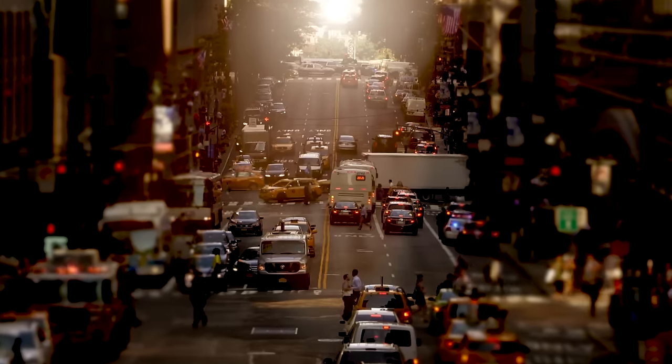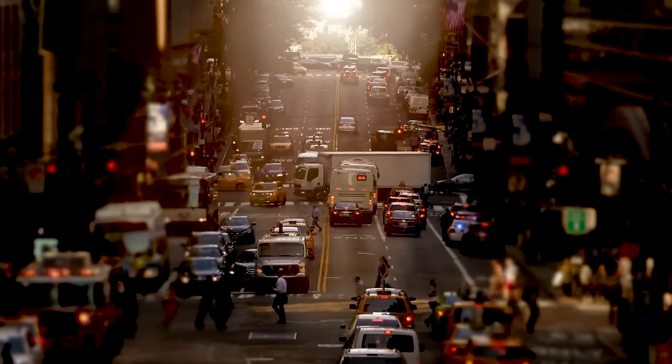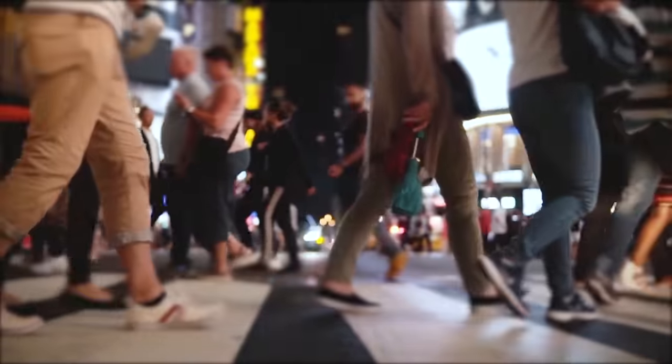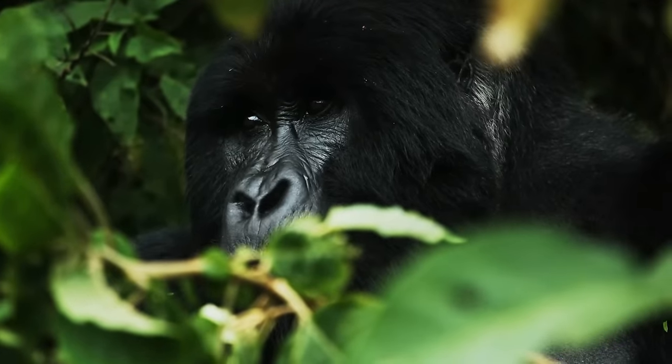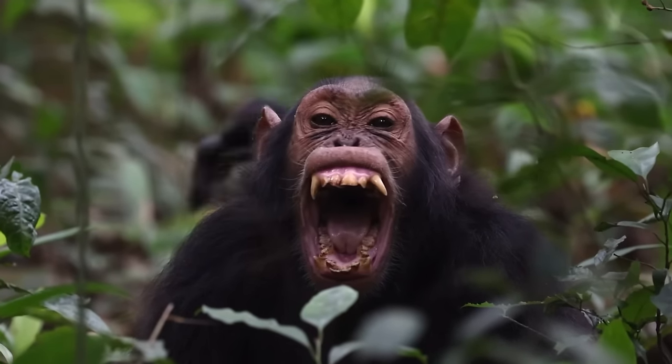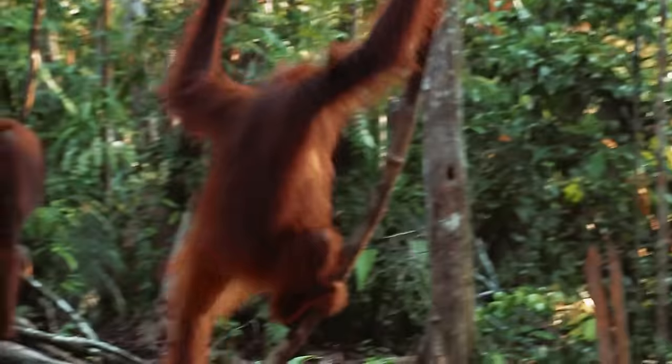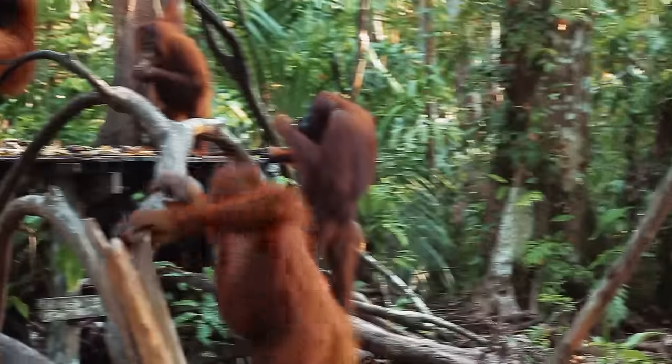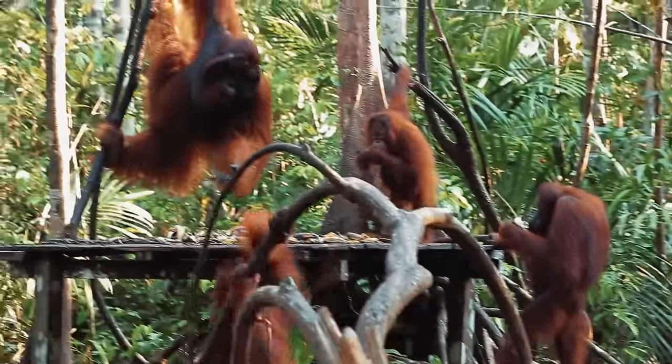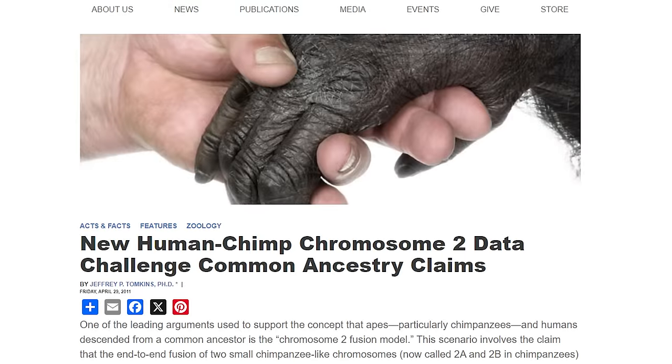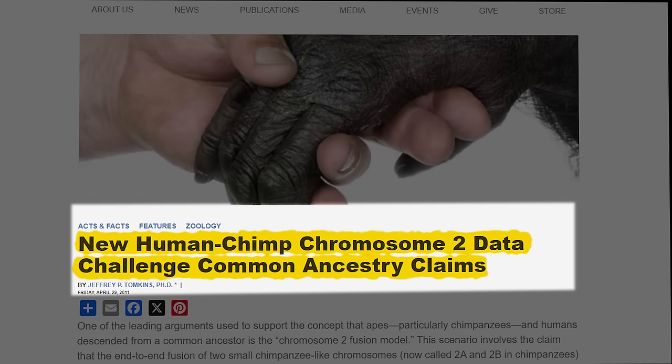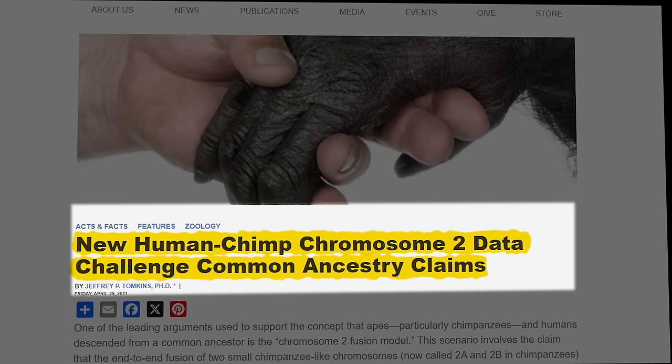Fast forward millions of years to today, and the tables have turned. Humans reign supreme, while our closest primate relatives, the great apes, seem almost primitive in comparison. From bigger brains to bipedalism, countless theories have been proposed to explain this dramatic divergence. But one theory stands out, a genetic enigma buried deep within our DNA, chromosome 2.